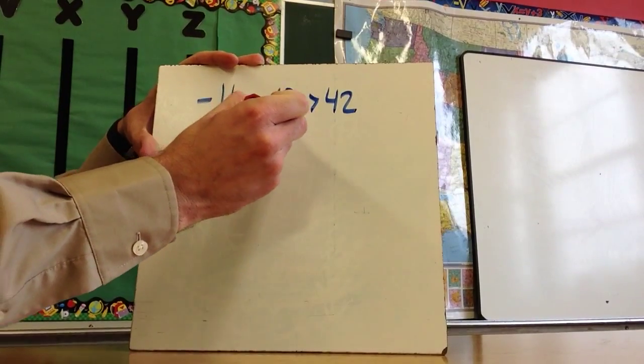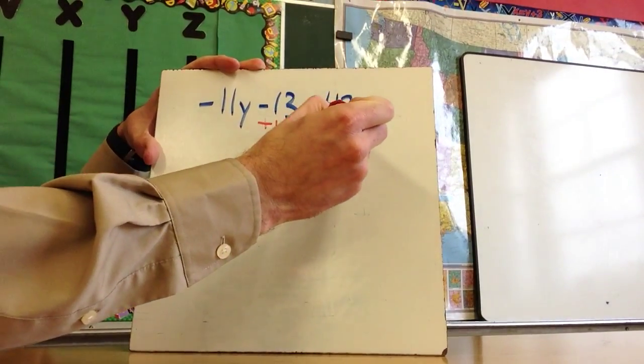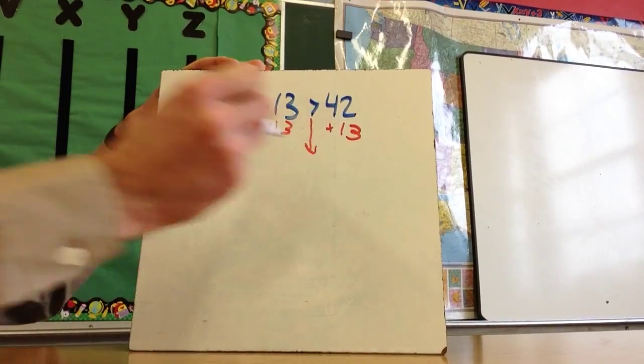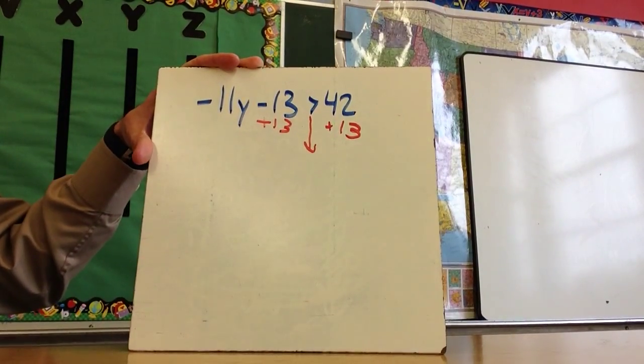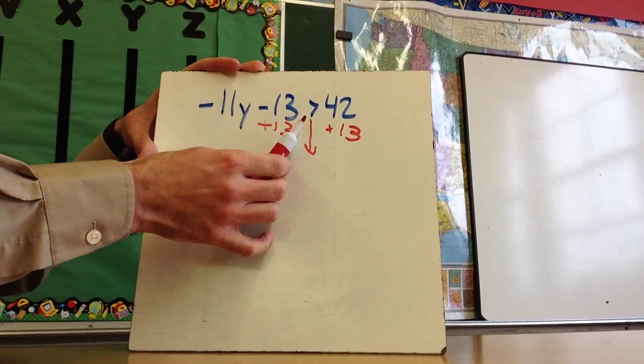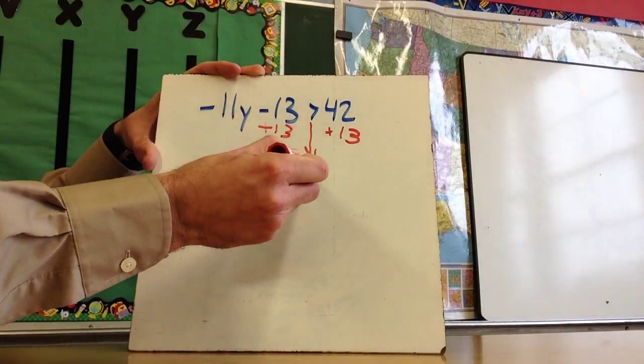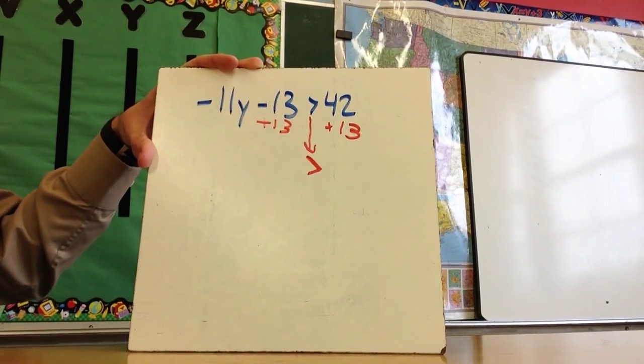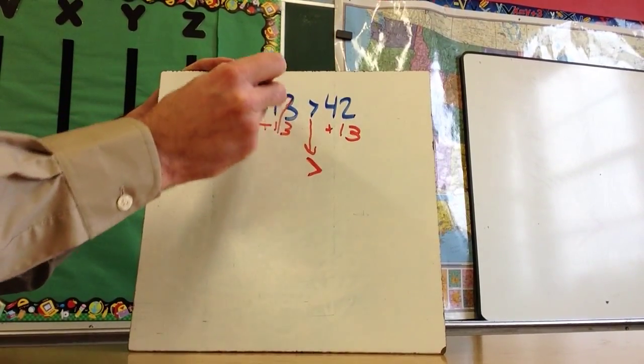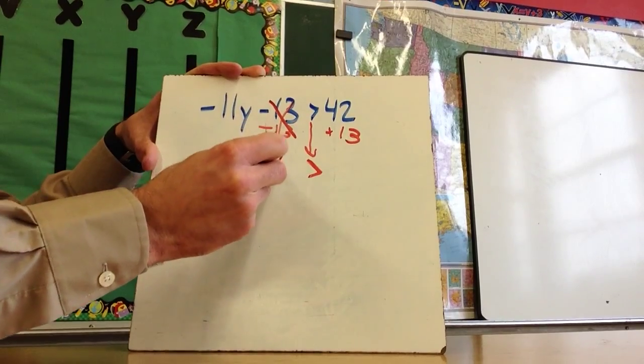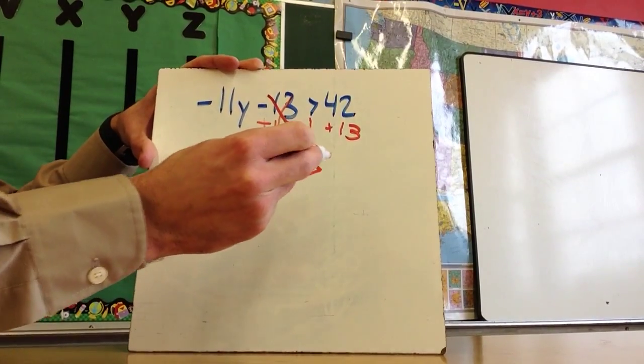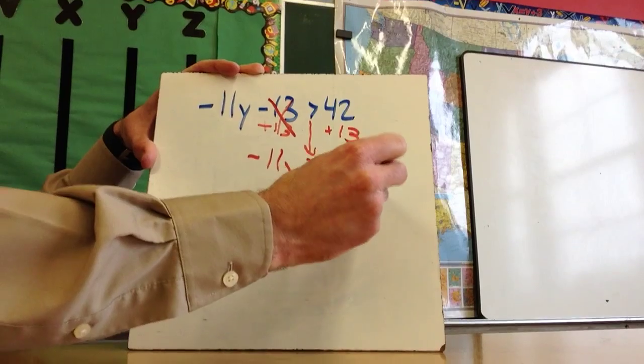The first thing I'm going to do is add 13 to both sides. It may make sense to try to do the sign first. Since I'm adding 13, I'm not multiplying or dividing by a negative number, so the sign is going to stay the same. This will cancel out, and I've got -11y is greater than 55.